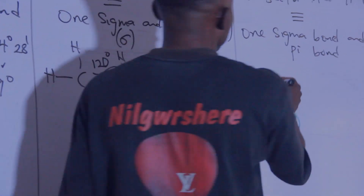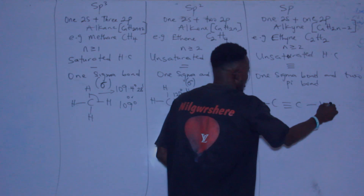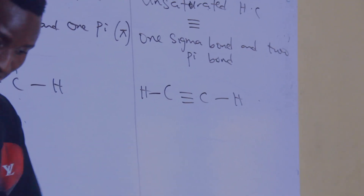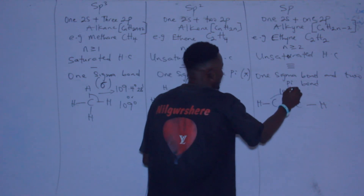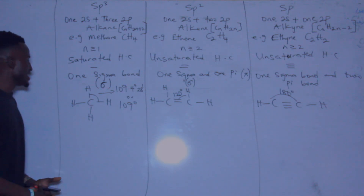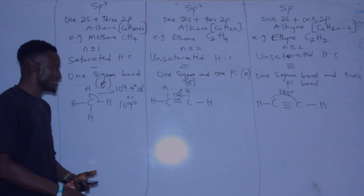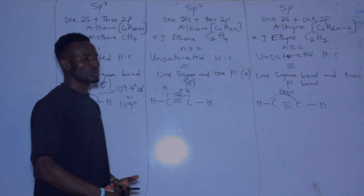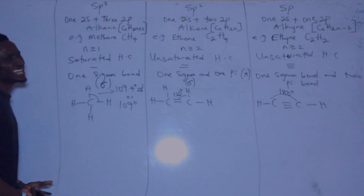For the alkyne family, the first member is ethyne. Its structure is a straight chain with a straight angle, giving a bond angle of 180 degrees. So the bond angle of sp³ is 109.4 degrees 28 minutes (approximately 109 degrees), sp² is 120 degrees, and sp is 180 degrees.